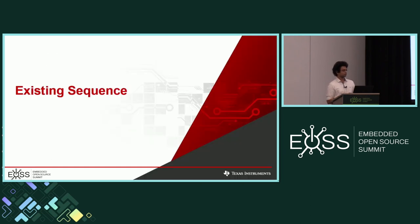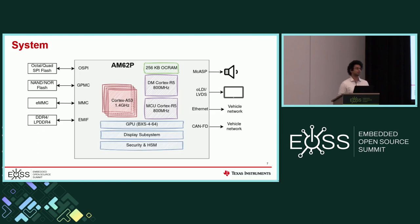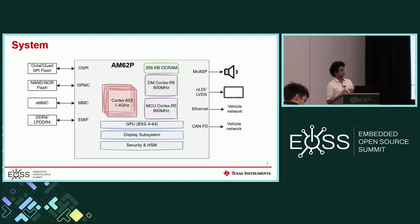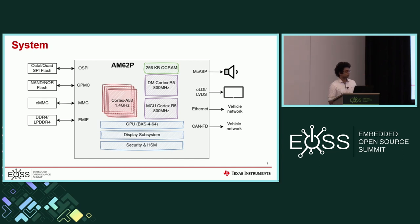Just to give a reference, the platform I'm talking about is the Texas Instruments AM62P. It's a quad-core Cortex-A53 application core with two Cortex-R5s running. It's important to highlight that one's called the DM, the device manager, and one's the MCU. The microcontroller application will be running off the MCU Cortex-R5. The multiple boot media we support includes OSPI NOR, NAND, and EMMC.